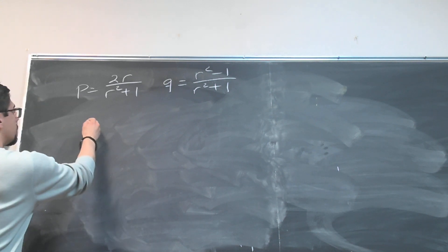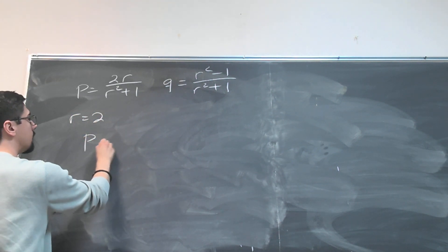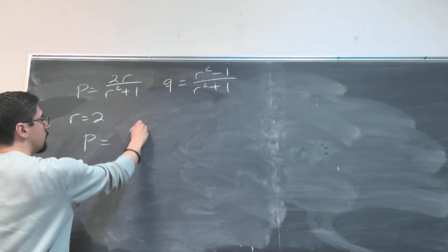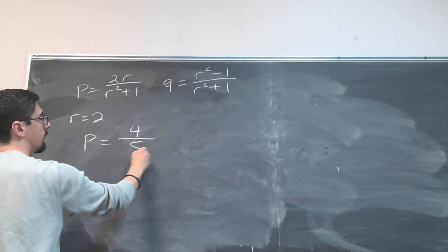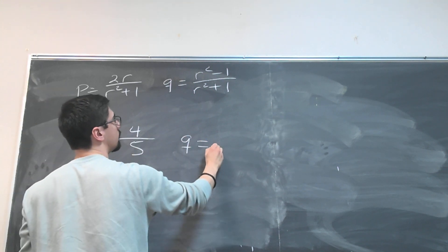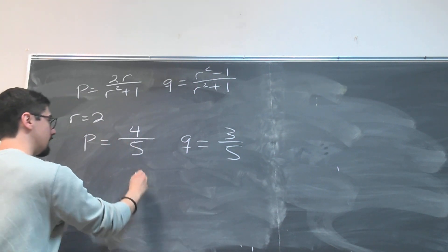Let's try the number 2. Let's say that r equals 2. When we do that we get that p is going to equal 2 times 2, which is 4, over 2 squared which is 4 plus 1 which is 5. And q is going to equal 3 over 5.